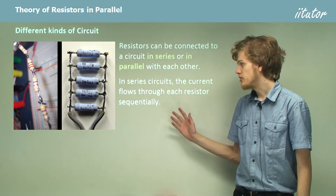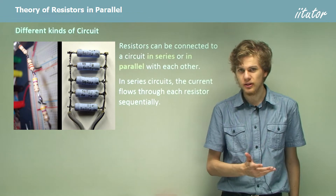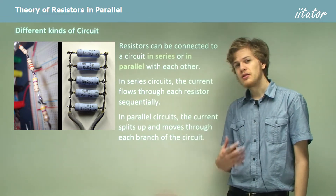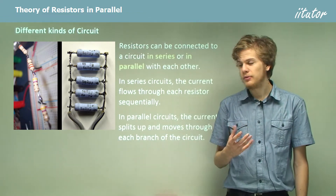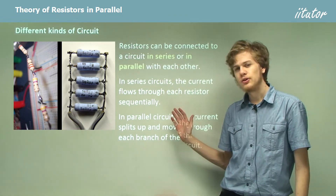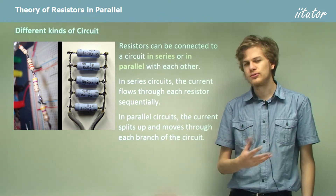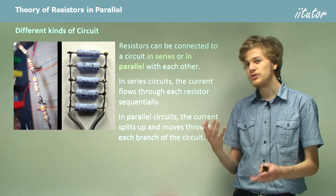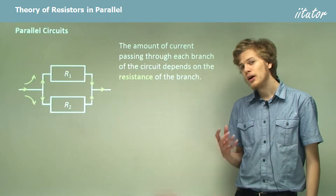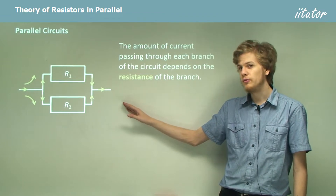In series circuits the current will flow through each resistor one at a time sequentially. In parallel circuits we have something quite different happening. The current will split up at each branch of the circuit and pass through the various different branches with different strengths depending on the resistance of each branch.